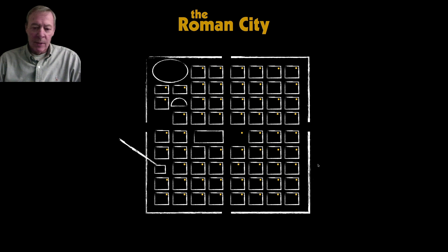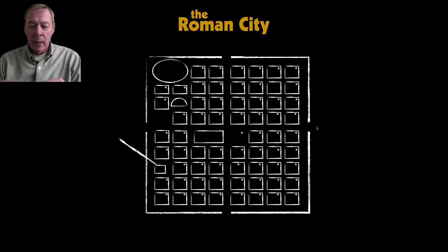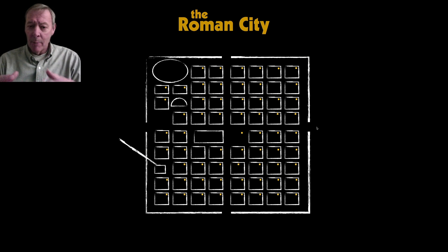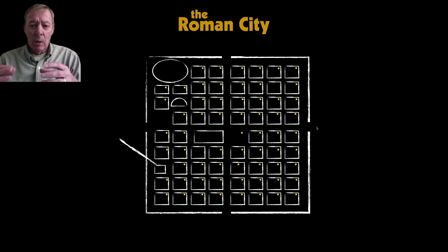A Roman city built from the ground up was based on the same design as the castrum. As I mentioned in my introduction, when Roman armies conquered existing territories, cities would not be torn down and rebuilt but simply added on to—as we see in Pompeii. But if a Roman engineer and architects had the opportunity to build a city from the ground up, it would be based on that basic castrum design, with streets at right angles so that addresses could be easily located.